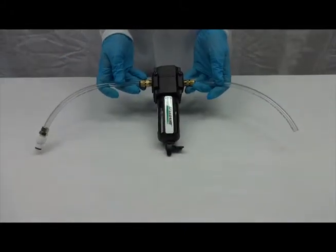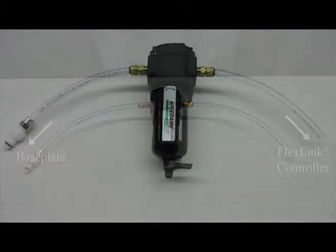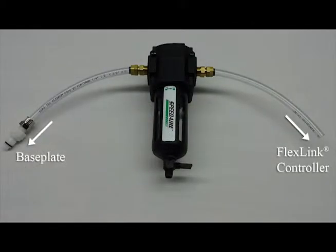Place the water trap at a position below the flex link unit. Check the water trap prior to each experiment to see if water is accumulating. Empty the water trap before it is more than half full.